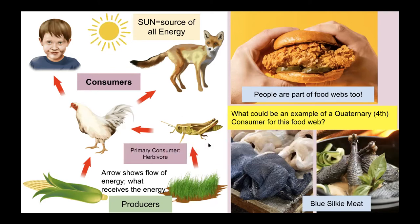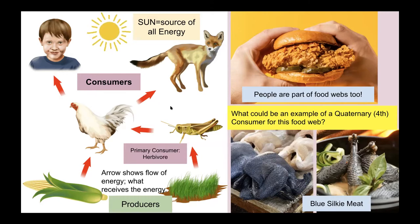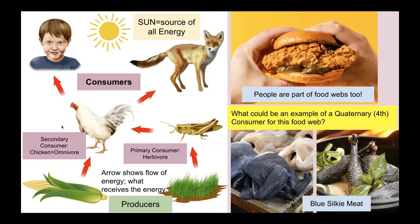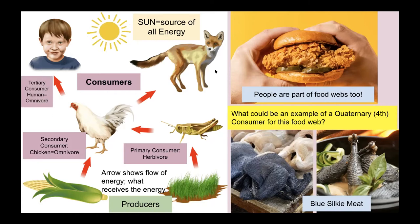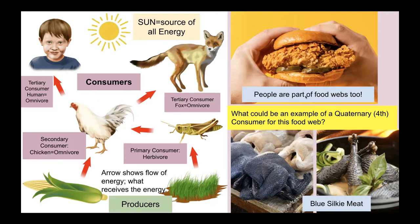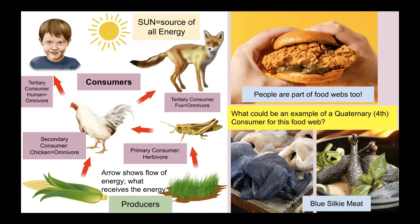The grasshopper is an example of what we call a primary or first-level consumer — the first animal to eat a producer. The chicken is receiving energy from the grasshopper, making it a secondary consumer — the second organism eating in the chain. The chicken can be eaten by a person or by the fox, so both the person and the fox are what we call tertiary or third-level consumers, and they both happen to be omnivores. People are part of food webs too — we have to eat other things for food and energy.